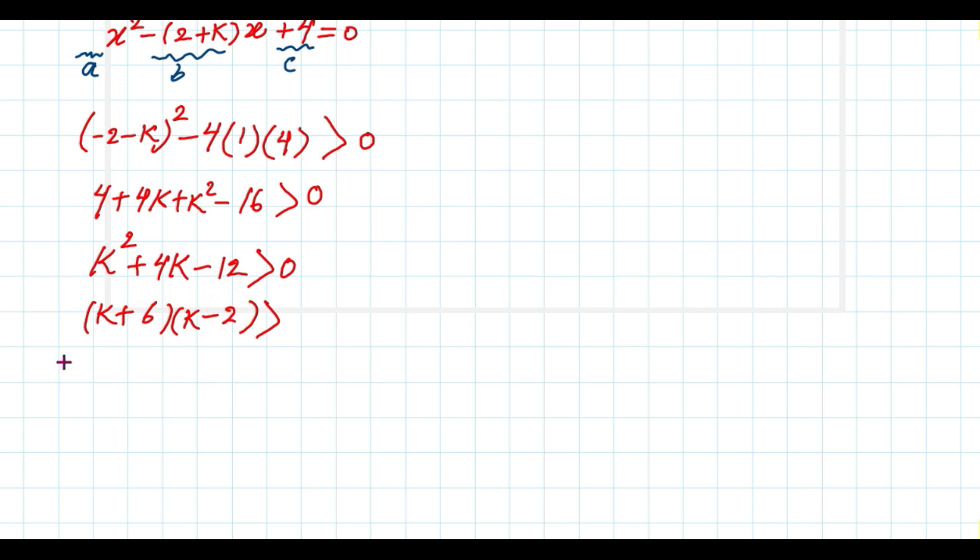Factorizing 12, you can say it's 6 times 2. We put 6 here and 2 here. Now you see that we have 6k with negative 2k is positive 4k, which is the middle term. Therefore, the factorization process is correct.